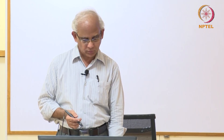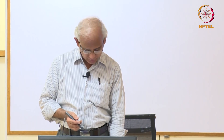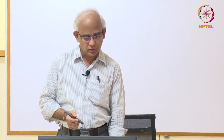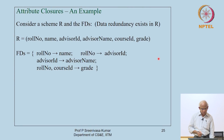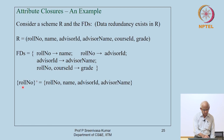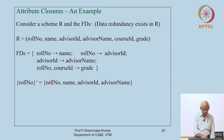Towards the end of last class we were looking at how to compute the attribute closure. Given a set of attributes or the schema and the functional dependencies, we can calculate the attribute closure. Given an attribute set, you include that into X, then since this is the left-hand side of some FD, we start including the right-hand sides into the schema.